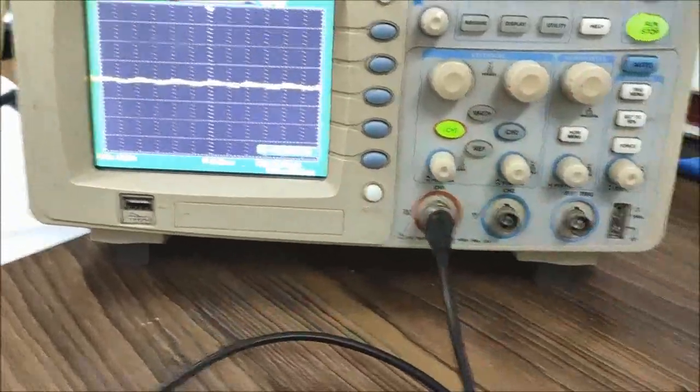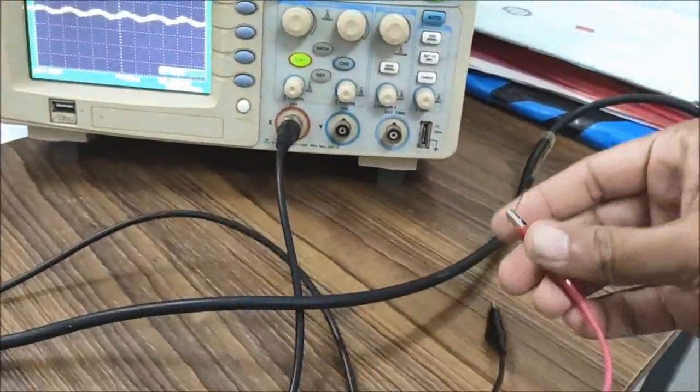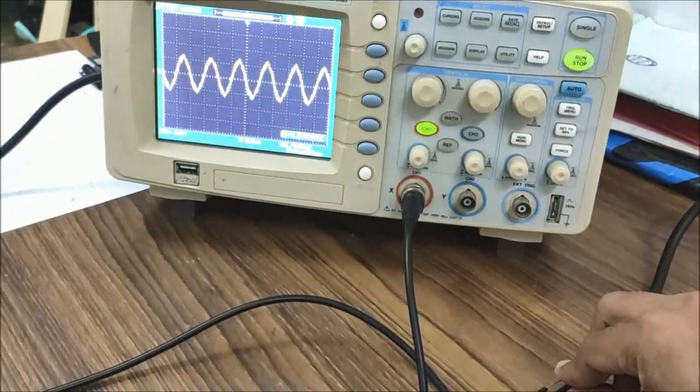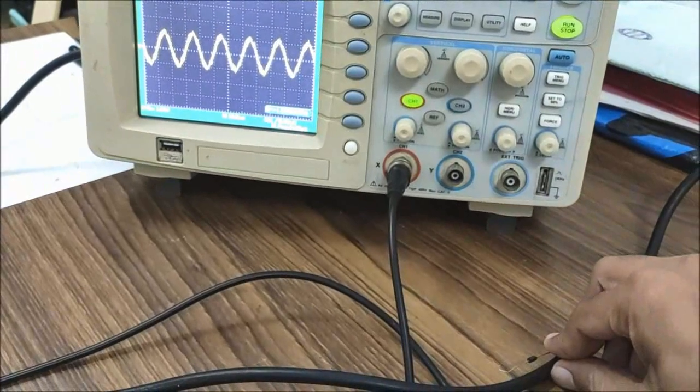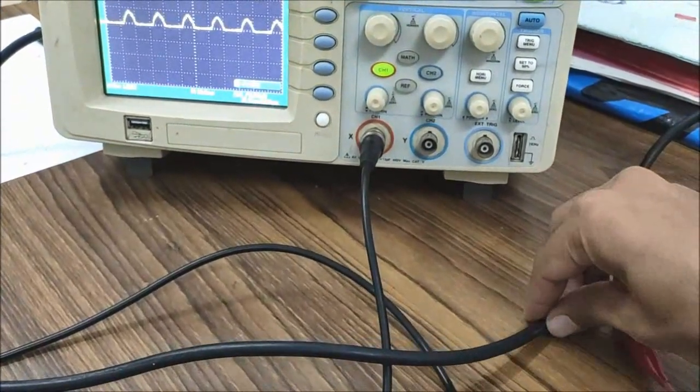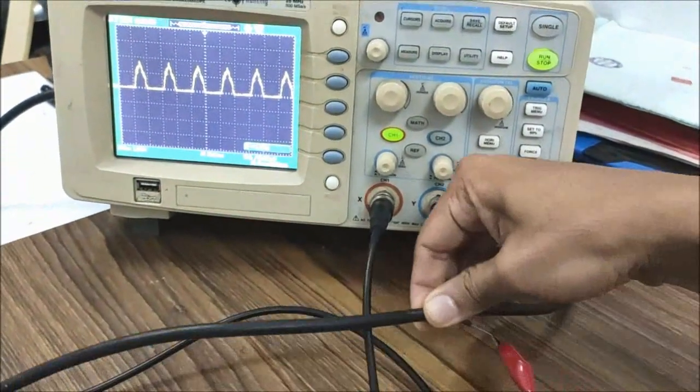This is why AC is more dangerous than DC of the same level. Body capacitance blocks DC current but allows AC current. In the case of DC, only body resistance comes into the picture, but in the case of AC, both resistance and capacitance come into play. Body capacitance is around a few nanofarads.